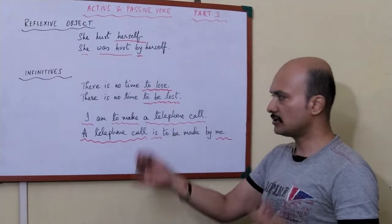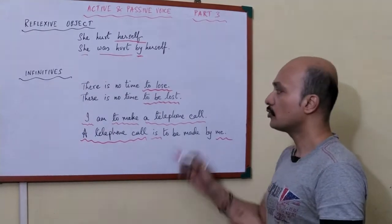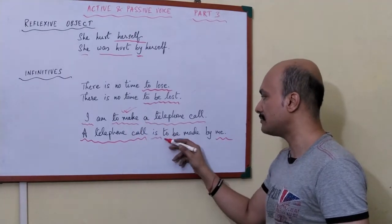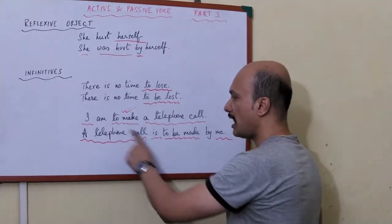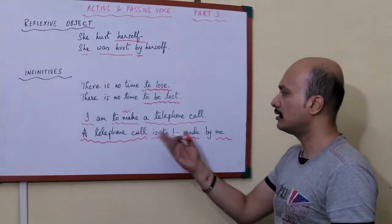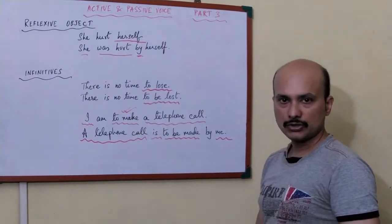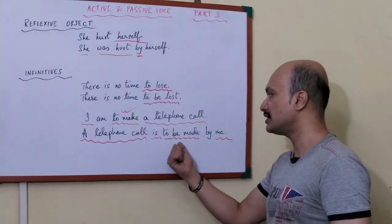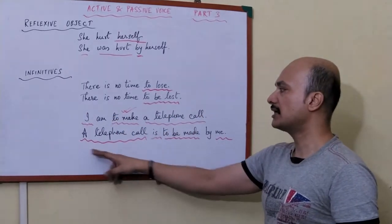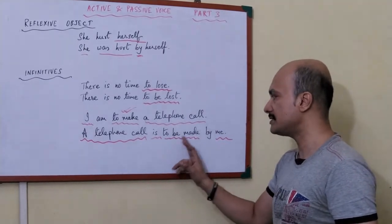The verb 'am' undergoes a change — it doesn't go into the passive. You cannot write the passive of a 'be' word, so it remains as 'is'. What we change into the passive is the infinitive 'to make', which becomes 'to be made'. So 'I am to make a telephone call' becomes 'a telephone call is to be made by me'.